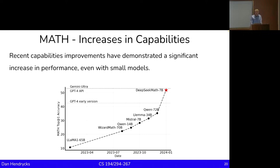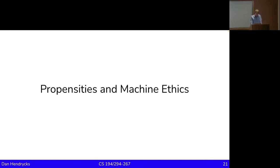That's capabilities. There will of course be other capability measurements over time. When models become more agentic and capable of sequential decision making, we'll need some new benchmarks — that paradigm is not really in place yet. This is largely testing knowledge and reasoning ability, and there's still some way to go, especially on mathematics.